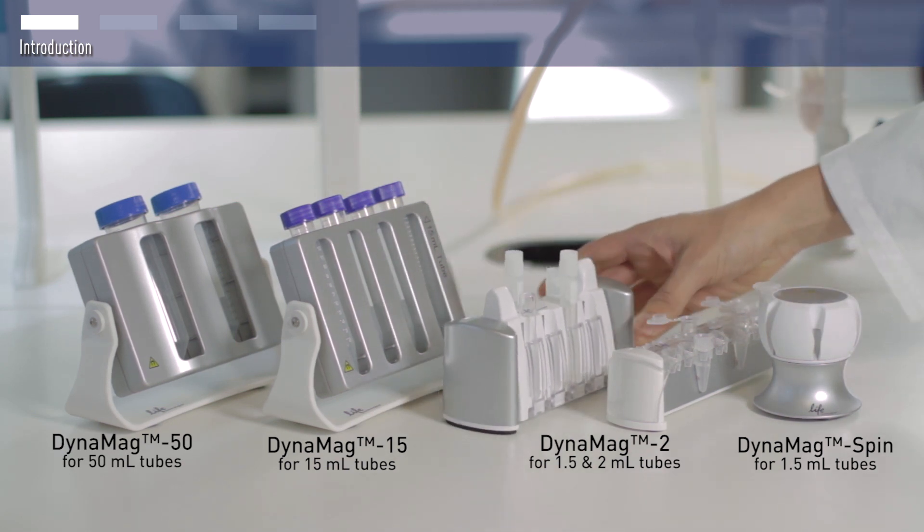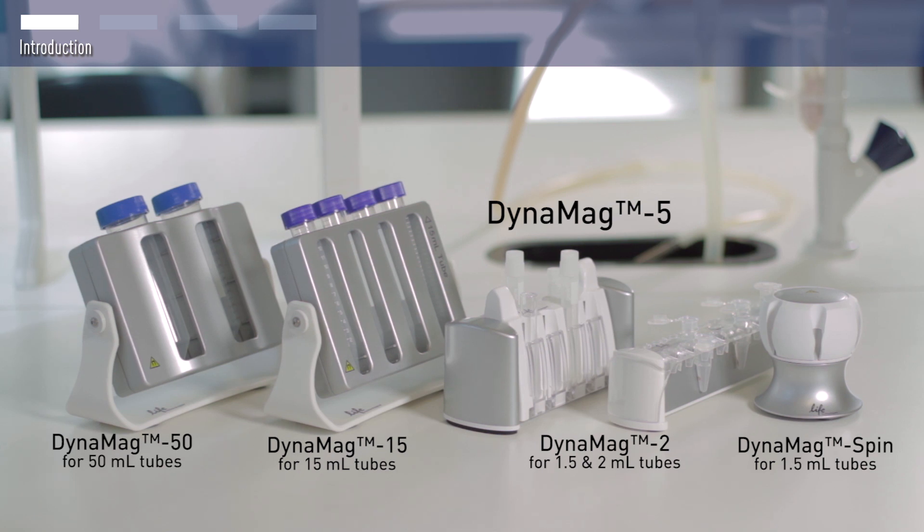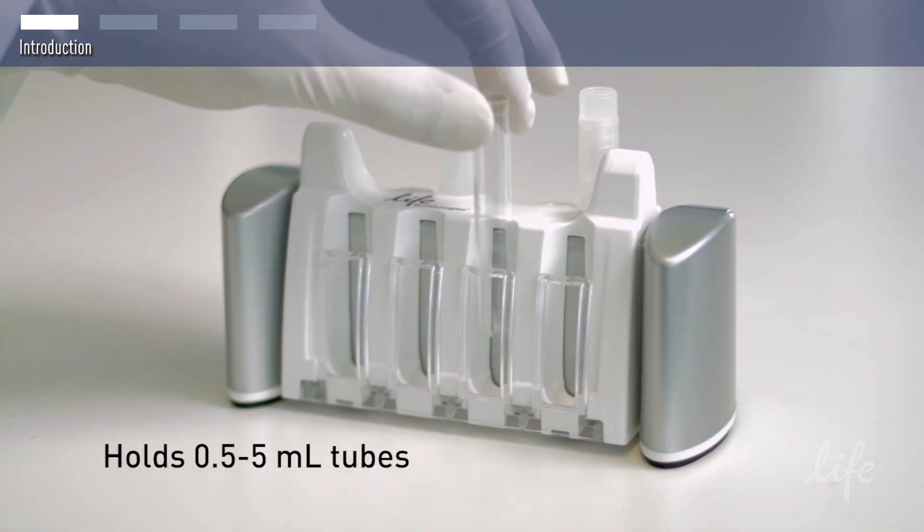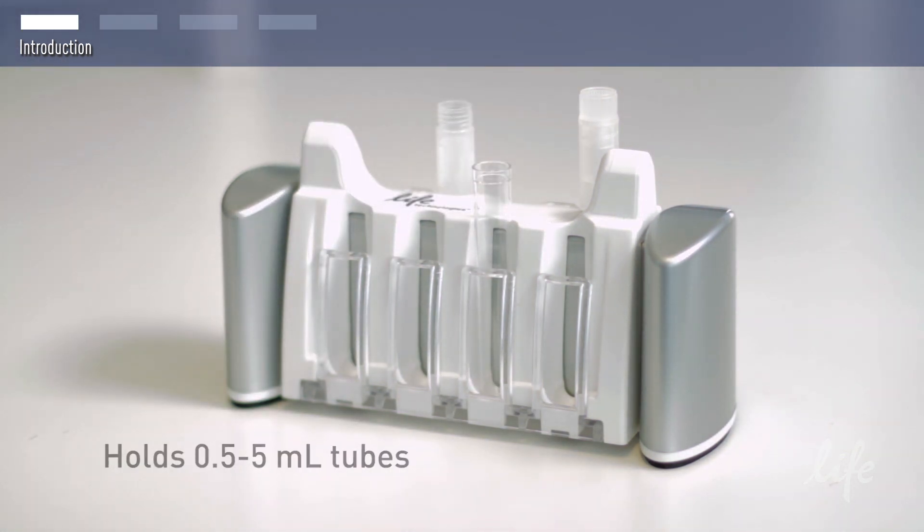We now released the DynaMag 5, which if you are working with fax tubes, is the magnet you want to use. The magnet holds any tube between 0.5 and 5 milliliters. Working with any size fax tubes is possible and easy.